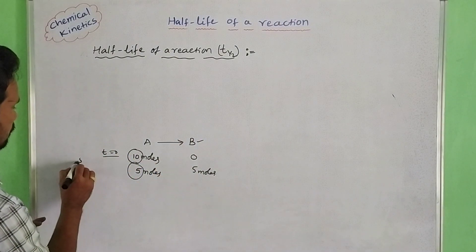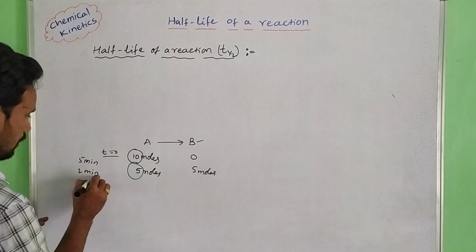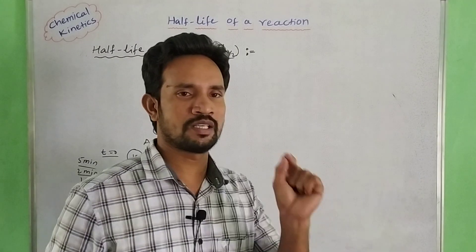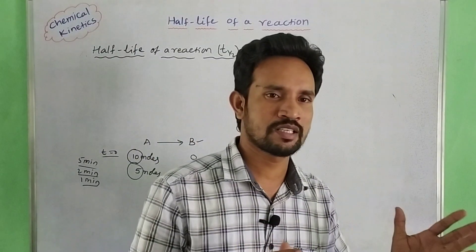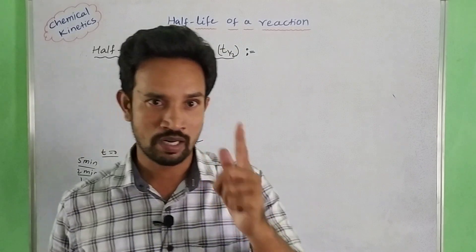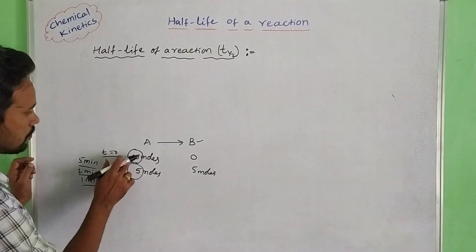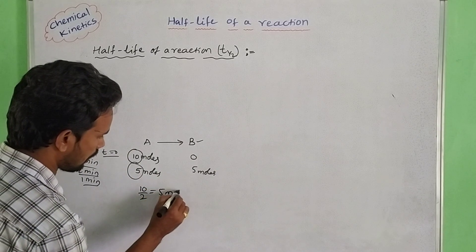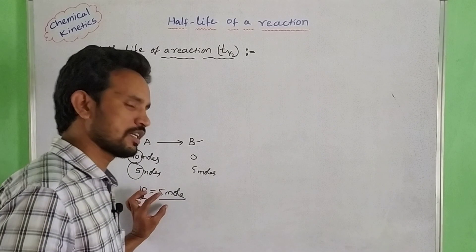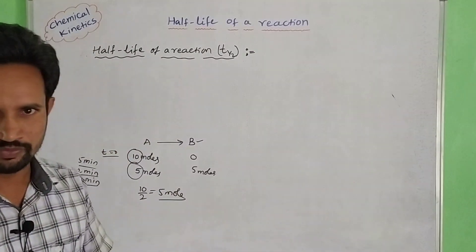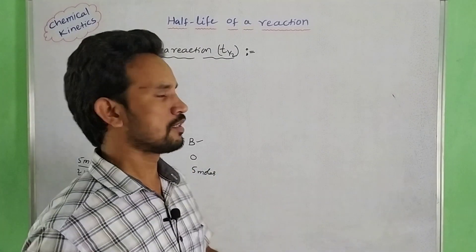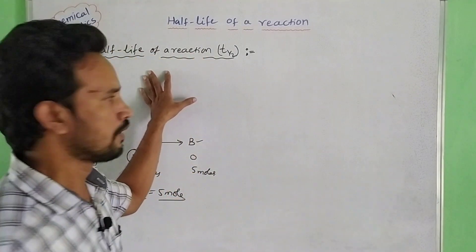So how much time is required for this? The time required — suppose 5 minutes, or 2 minutes, or 1 minute — that is the time required for the concentration of reactant to be reduced to one-half of its initial concentration. That is half-life.